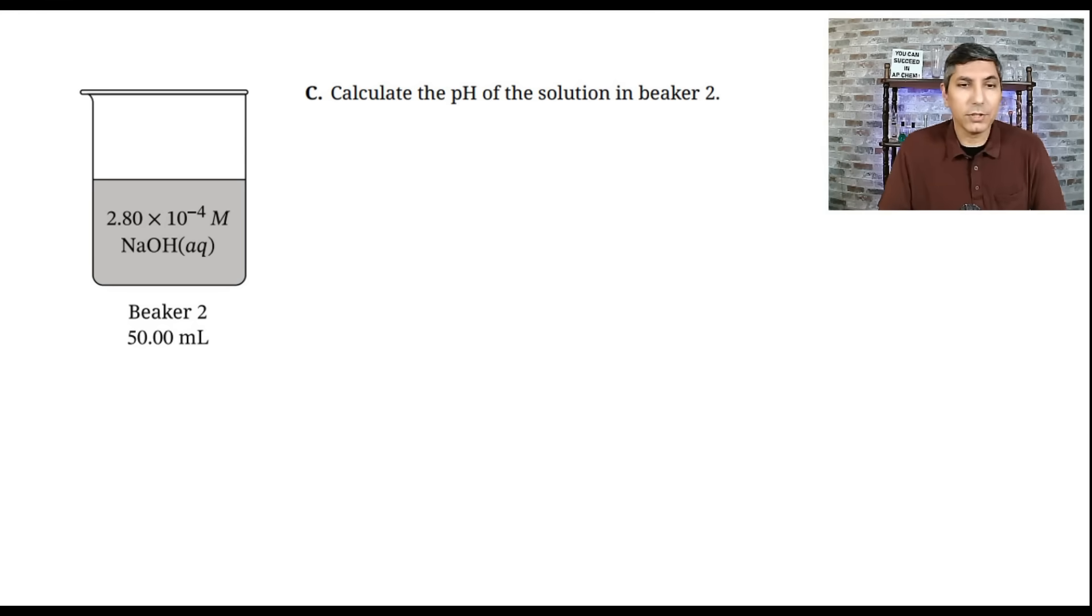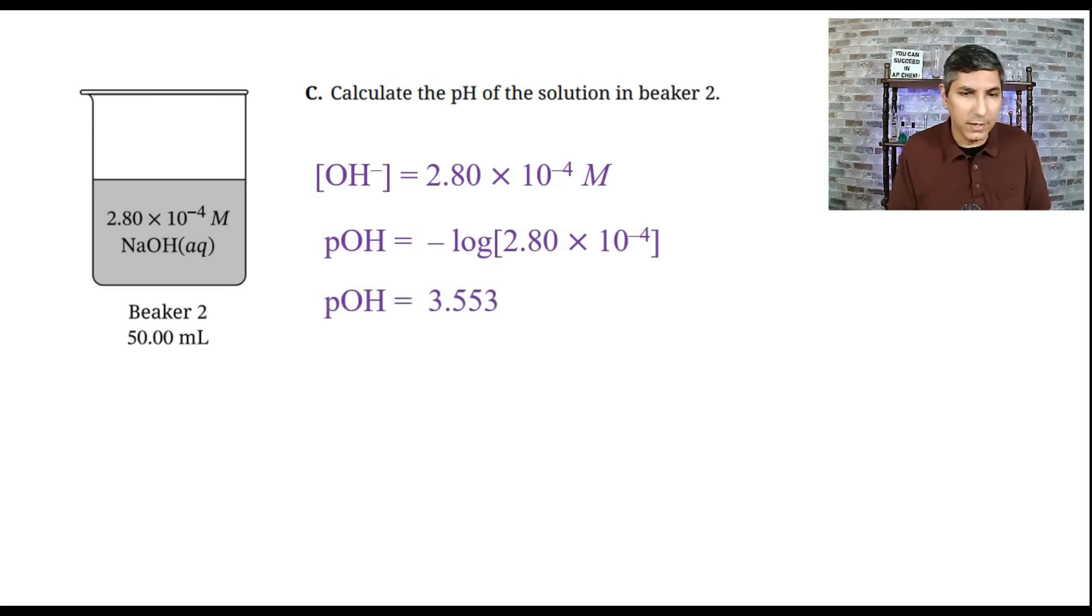Now moving on to part C, it tells us just to calculate the pH of the solution in beaker two. And so we noticed that it has a concentration of 2.80 times 10 to the negative fourth molar sodium hydroxide. So that means that the hydroxide concentration is 2.80 times 10 to the negative fourth molar. If we take the negative log of that value, that's going to give us the pOH. And so the pOH of this is about 3.553. Now we know that if you want to find the pH of something, well pH plus pOH equals 14 at 25 degrees Celsius. So all we have to do here is take 14 minus 3.553, and we find that the pH of this solution is about 10.447. So if you said that, then give yourself a point for that one as well.